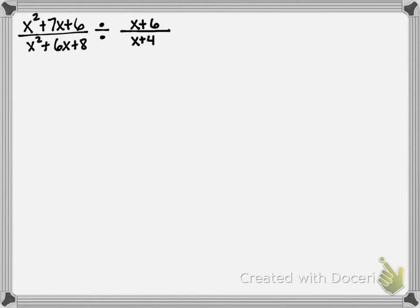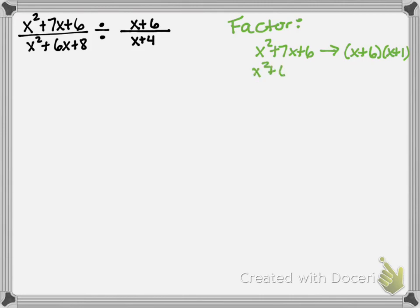This next one isn't as nice — I didn't factor for you. So we'll have to factor x²+7x+6, which factors to (x+6)(x+1). Then we need to factor x²+6x+8, which factors to (x+4)(x+2). I've said this many times in class: if you cannot factor, you need to come talk to me, or go back to the Edpuzzle video from September or October to refresh your memory on how to factor.